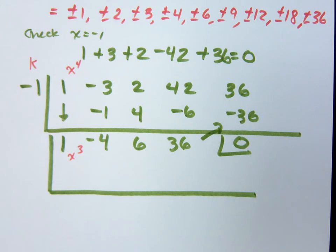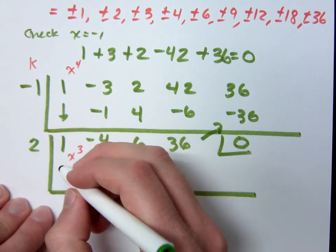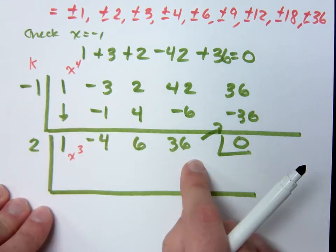Now, sometimes a number works more than once. So negative 1 might work again, but it doesn't here. So now you're going to try positive 2. You can try positive 2. Now, if you do 2 here, you've got to try negative 1 again, right? Right, but very quickly you see that it's not going to work.